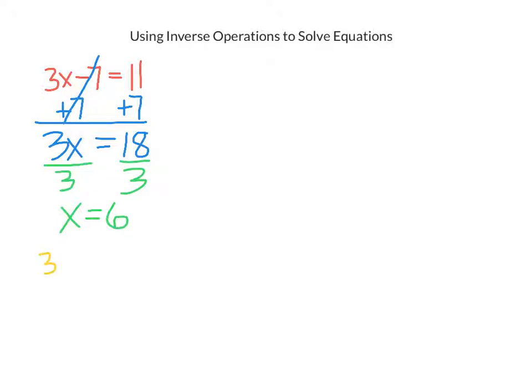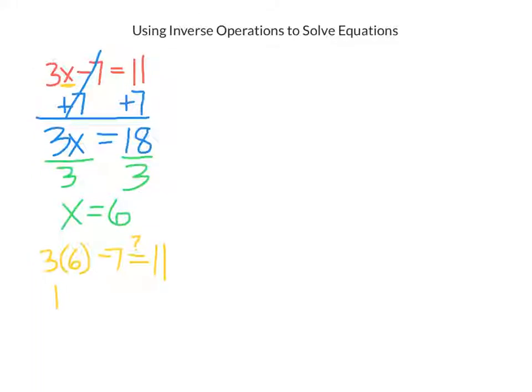So we replace the x with 6. Does 3 times 6 minus 7 equal 11? Now we do the order of operations. Multiply first, 18 minus 7. And does that equal 11? And 18 minus 7 does equal 11. So we did it right.